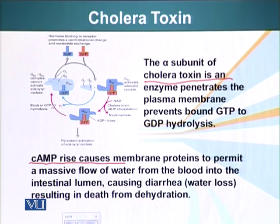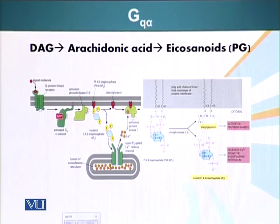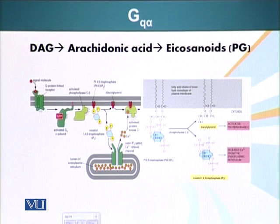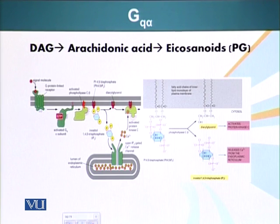Another type of G-protein is called GQ. The alpha subunit of GQ, rather than activating adenyl cyclase, activates another enzyme attached to the inner surface of the plasma membrane called phospholipase C.